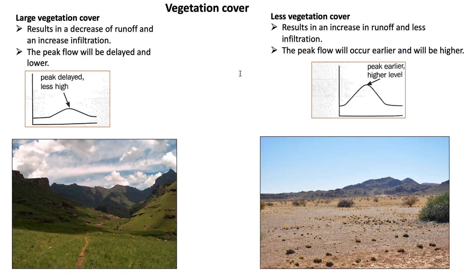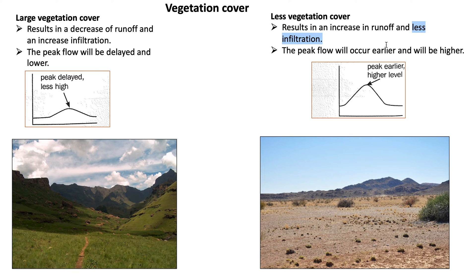Looking at vegetation cover: a large vegetation cover results in a decrease of surface runoff and an increase in infiltration — the peak flow will be delayed and much lower. With less vegetation cover, this results in an increase in runoff and less infiltration, and peak flow will occur earlier and will be higher.